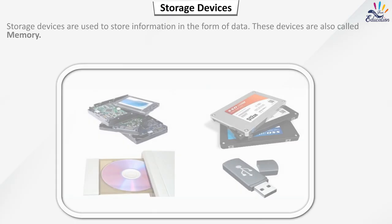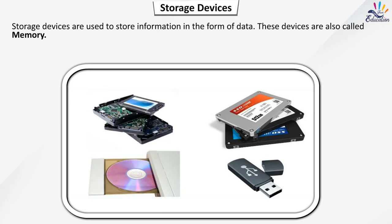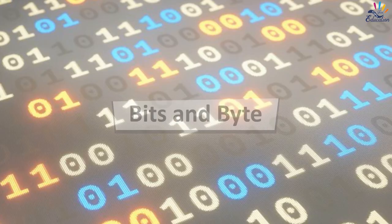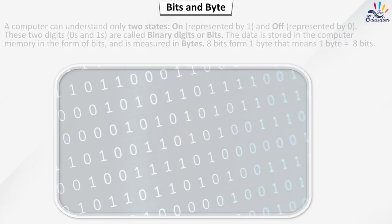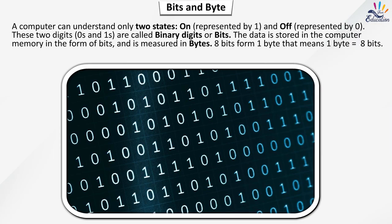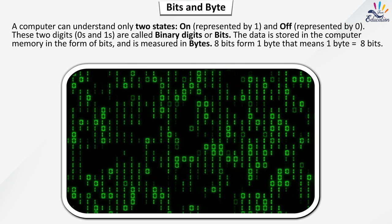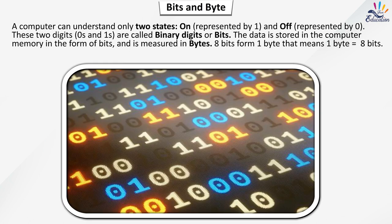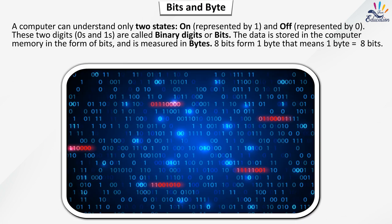Storage devices are used to store information in the form of data. These devices are also called memory. A computer can understand only two states: on and off. These two digits, zeros and ones, are called binary digits or bits. Data is stored in the computer memory in the form of bits and is measured in bytes. Eight bits form one byte.